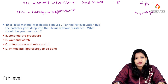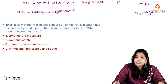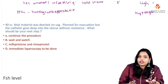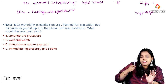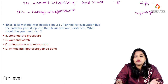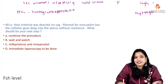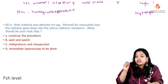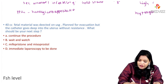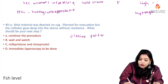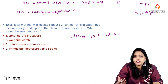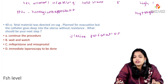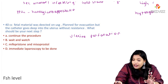Next question: 40 cc of fetal material detected on USG; planned for evacuation, but the catheter goes deep into the uterus without resistance. During evacuation, the suction cannula went deep inside the uterus without resistance — meaning it has perforated the uterus. This is a uterine perforation. In pregnancy the uterus is very soft, so perforation is more likely, and the uterus is highly vascular, increasing the risk of hemoperitoneum.